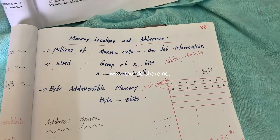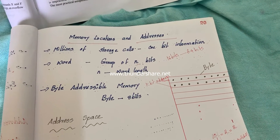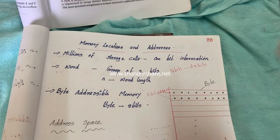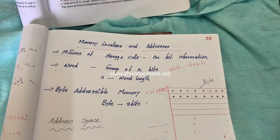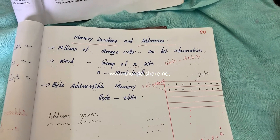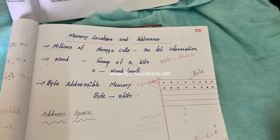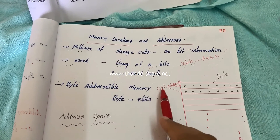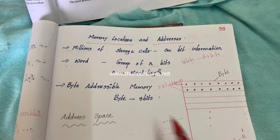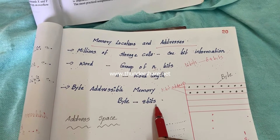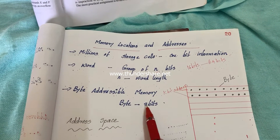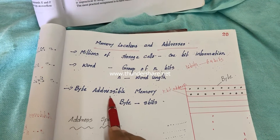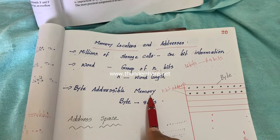In order to support basic memory store or memory retrieval operations, we need to assign certain addresses to different locations of the memory. Our memory follows a byte addressable memory system. A byte means a combination of 8 bits — 8 bits form a byte. Our memory follows this byte addressable memory system.